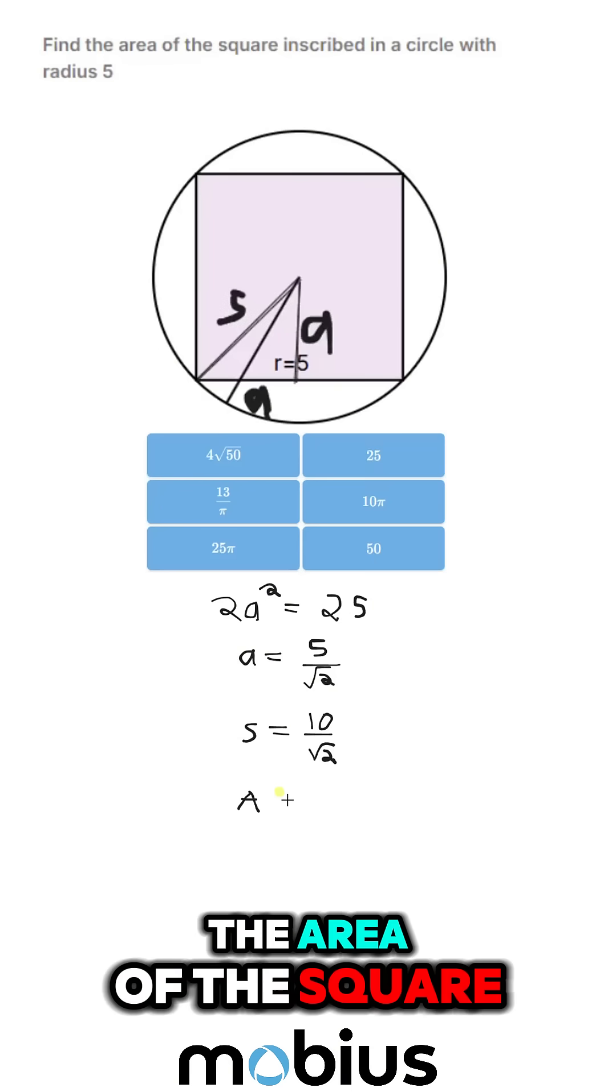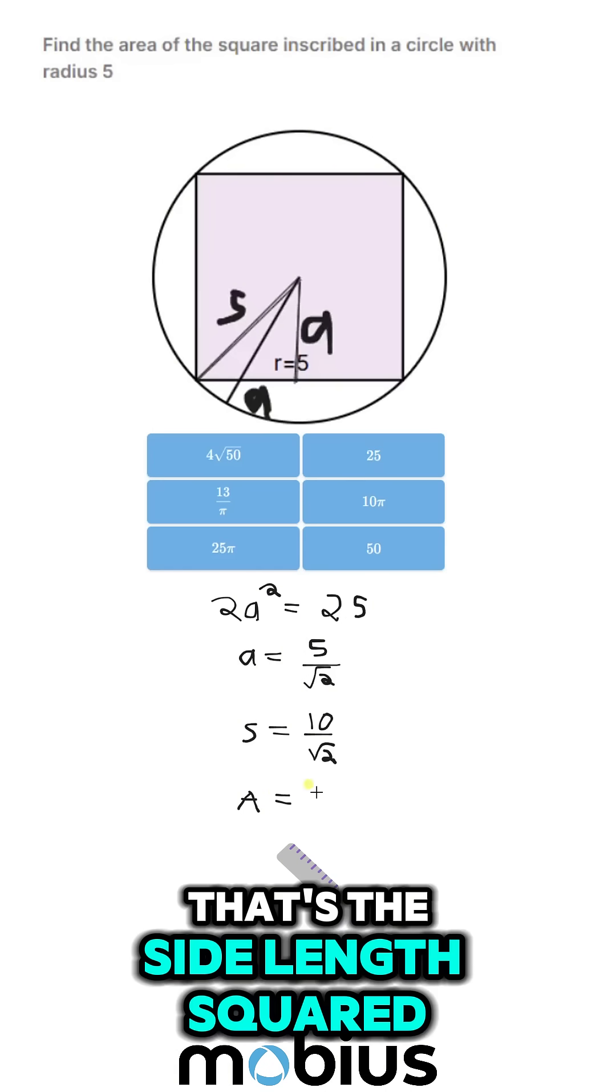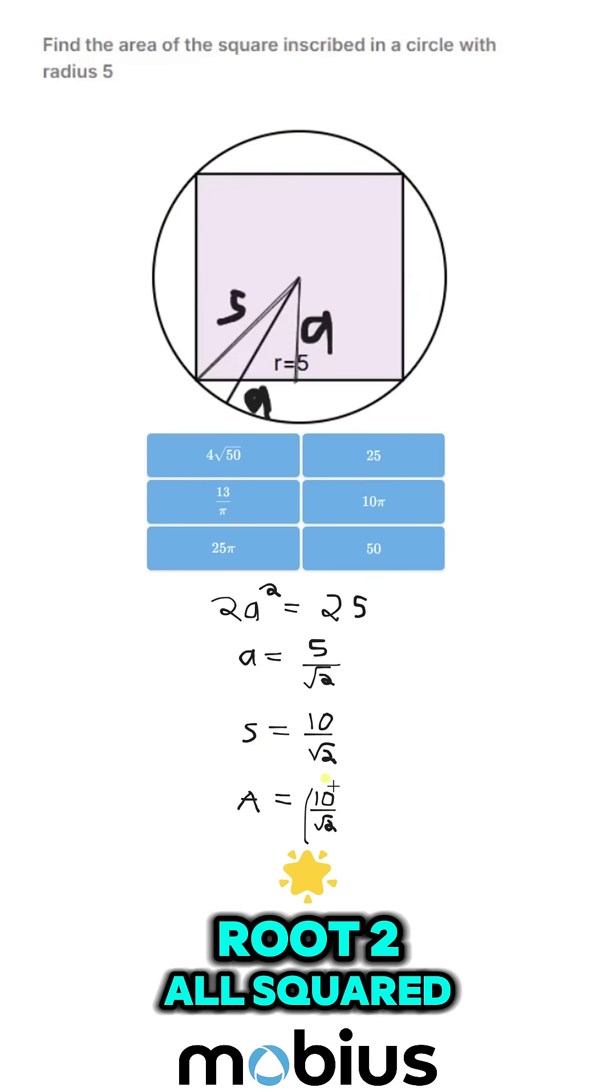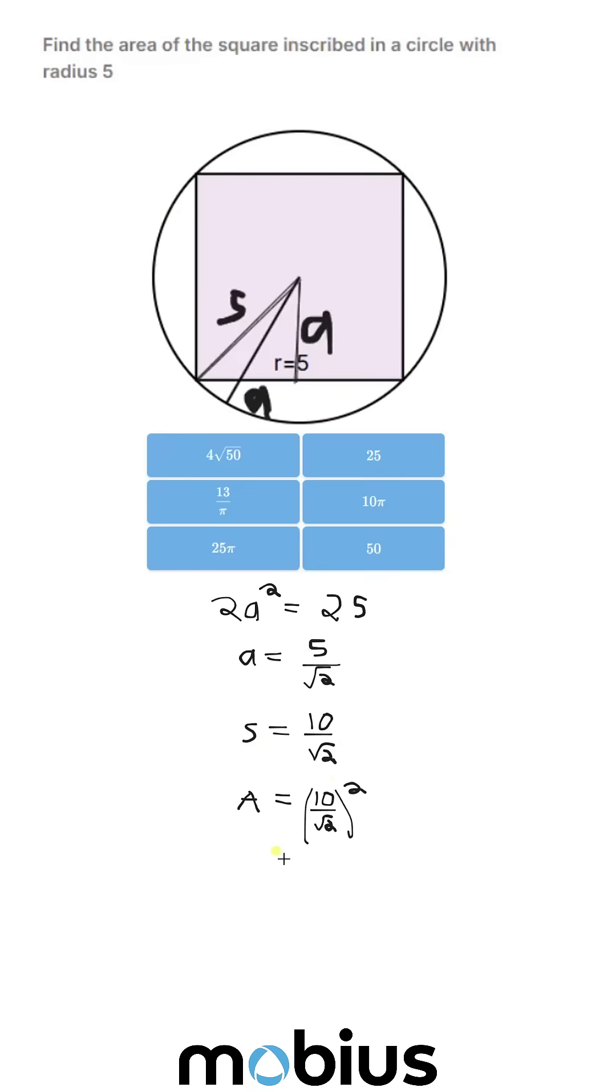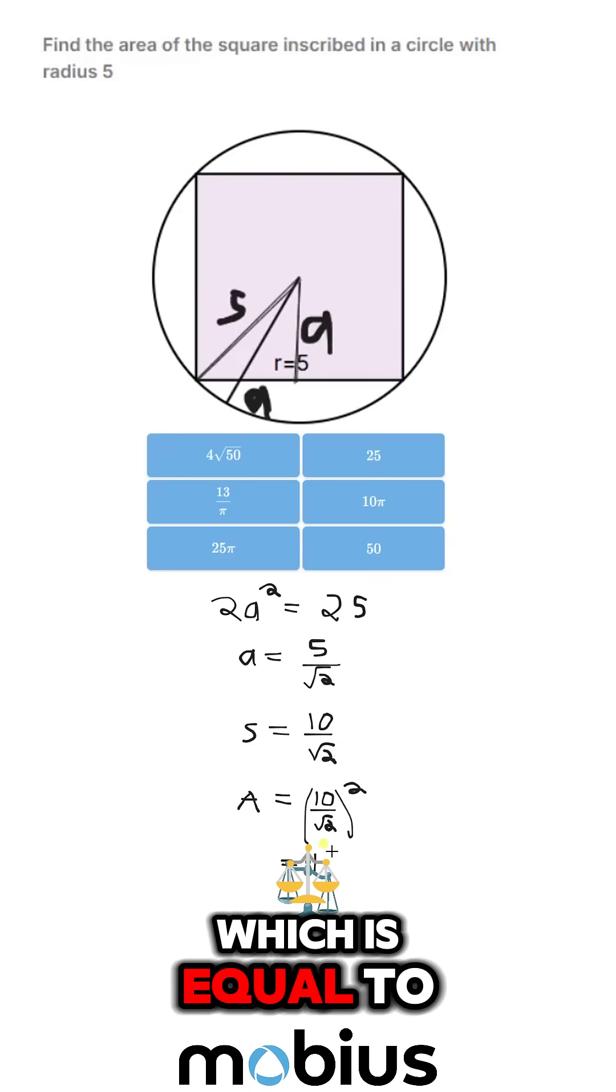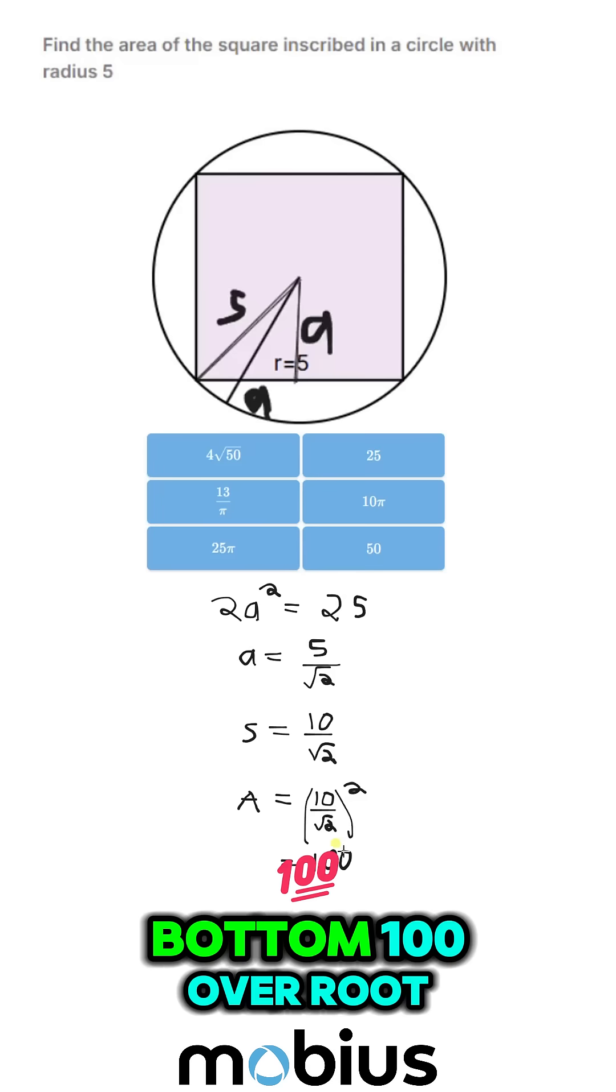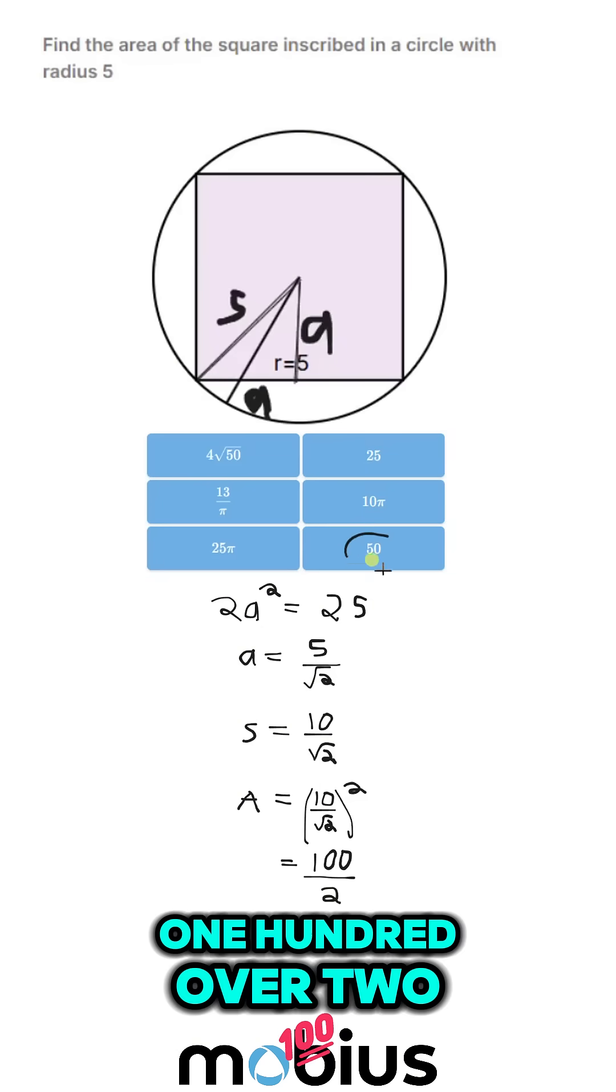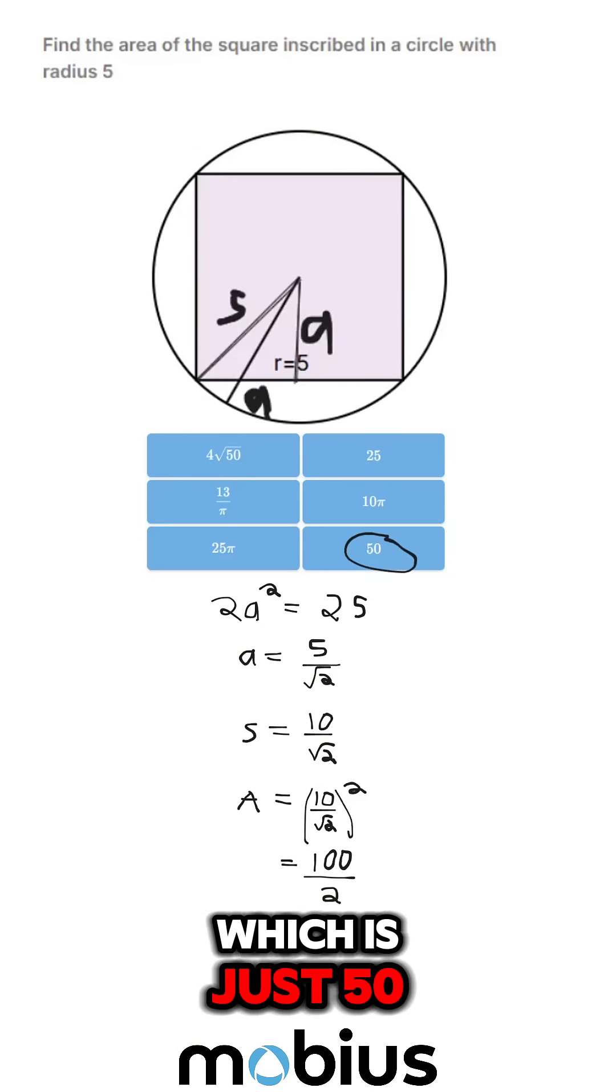And if we want the area of the square, that's the side length squared. So it's 10 over root 2, all squared, which equals squaring top and bottom: 100 over root 2 squared, which is just 2. So 100 over 2, which is just 5.